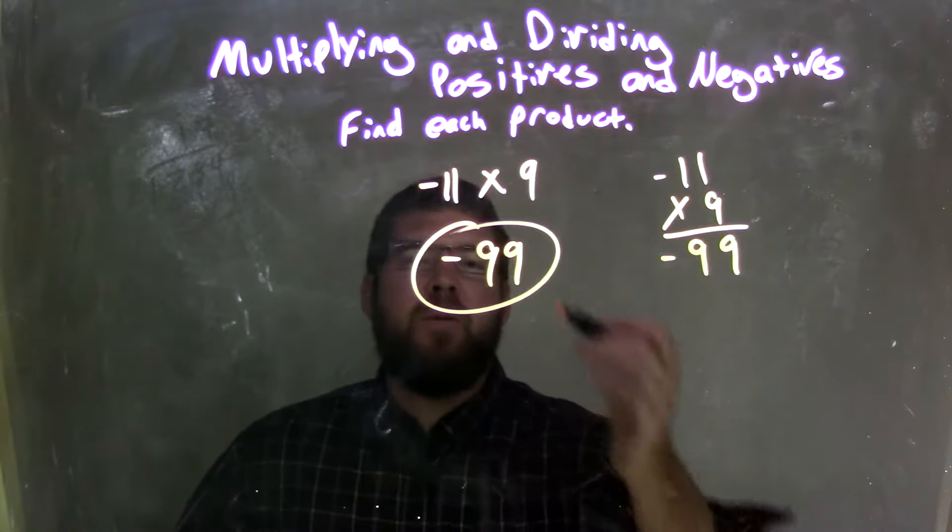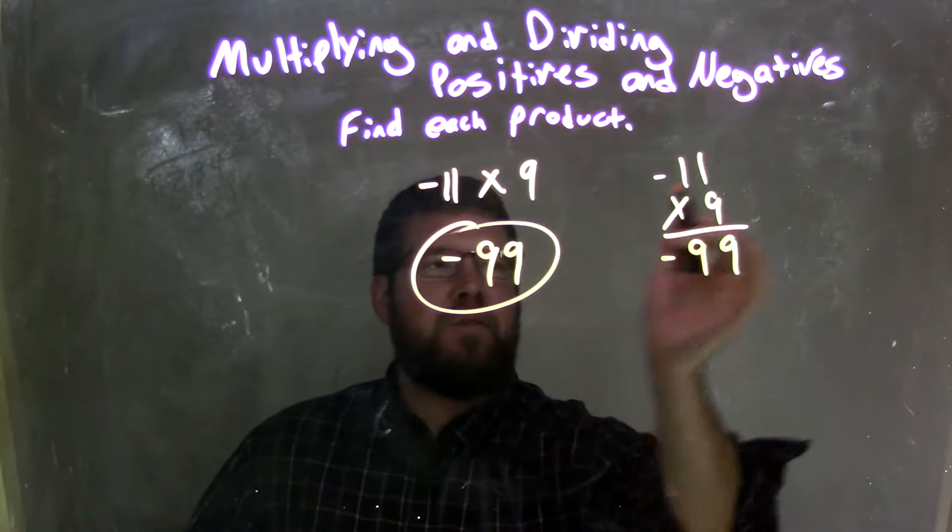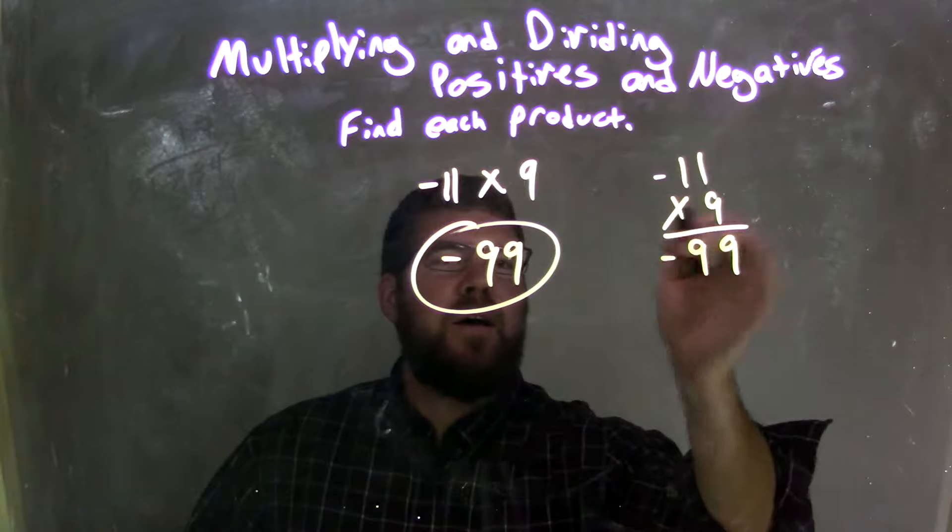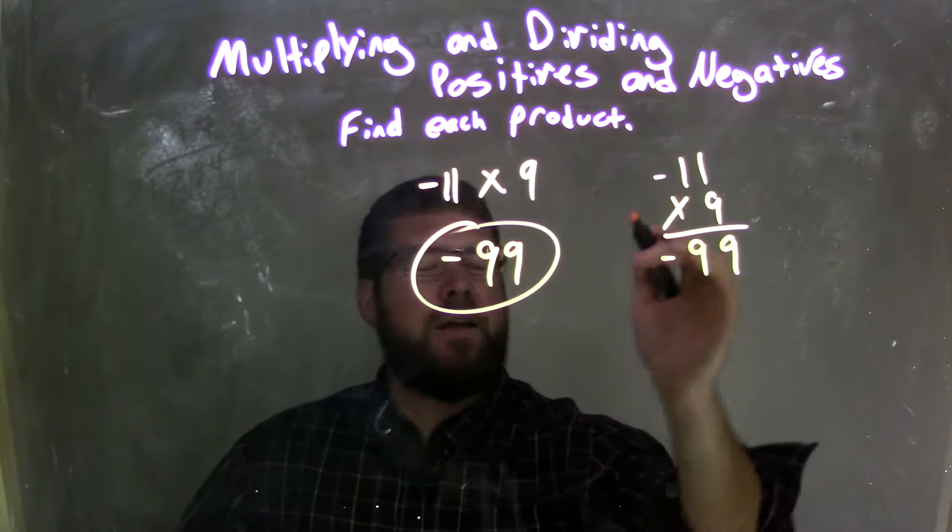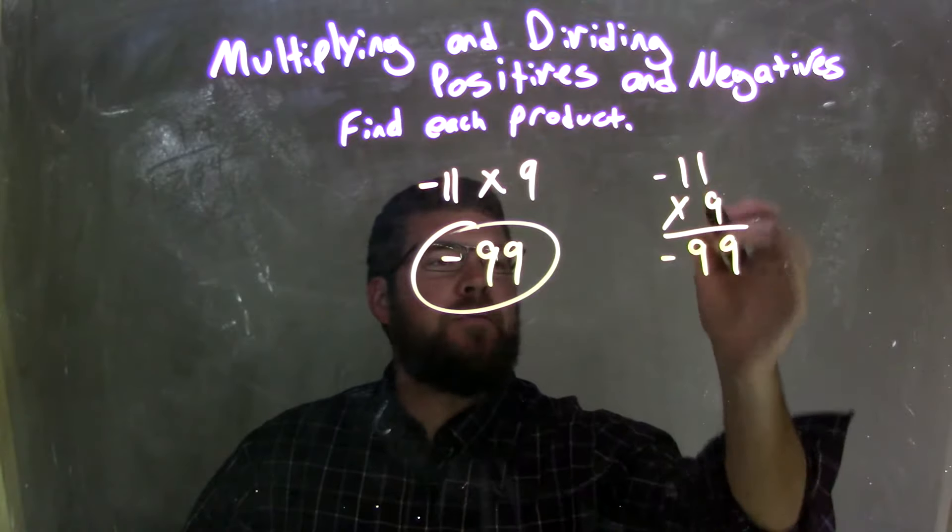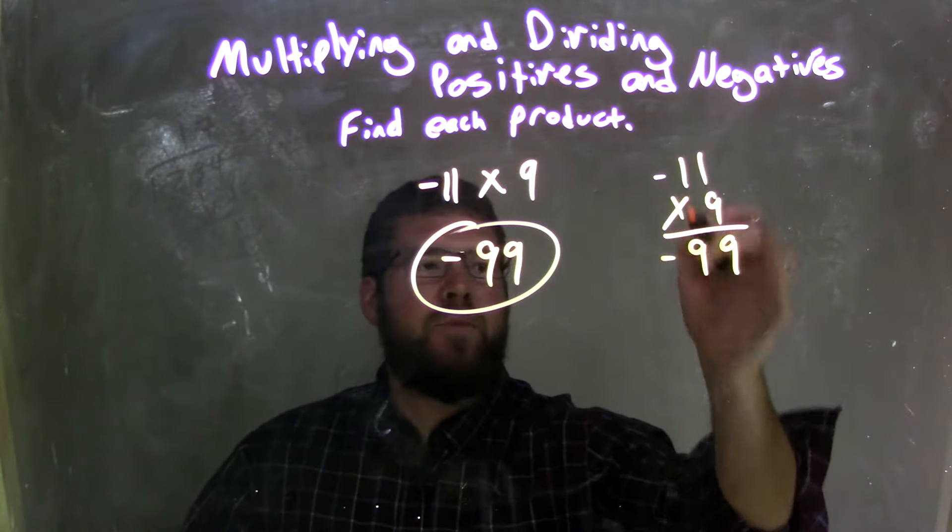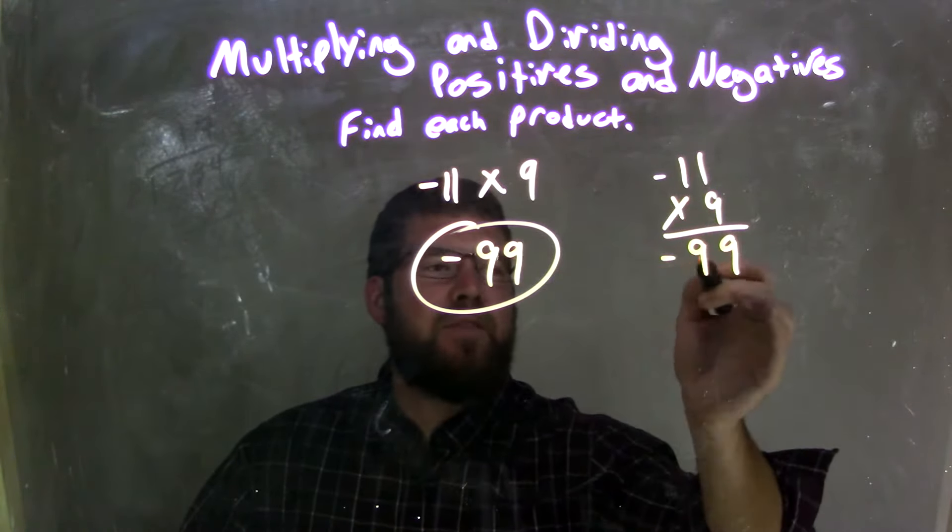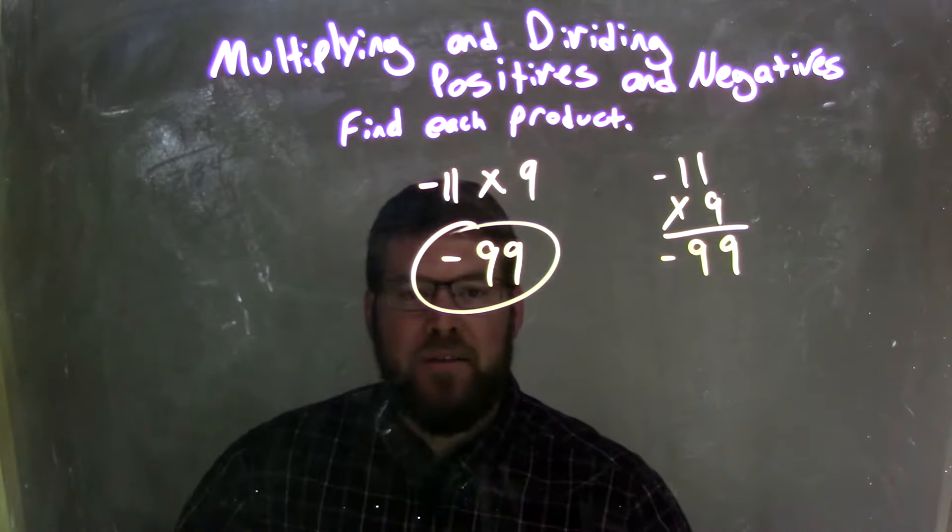Let's recap. We started with negative 11 times 9. We knew our final answer had to be negative because one negative times a positive is a negative. 9 times 1 is 9, 9 times this 1 is 9, and the negative comes down. We have negative 99 as our final answer.